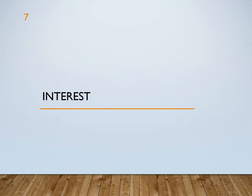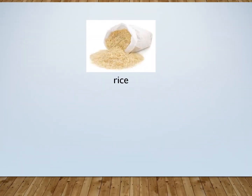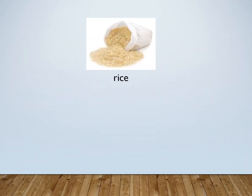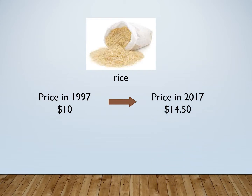Next, let's look at interest. This is a bag of rice. In 1997, its price was $10. Ten years later, in 2017, the price went up to $14.50. As you can see, prices can increase over time. This is called inflation.